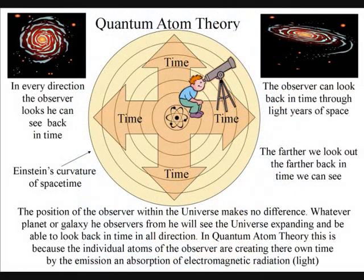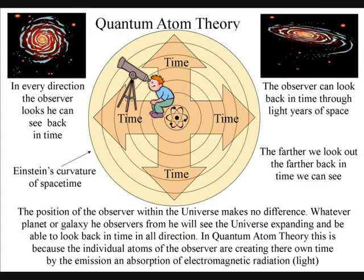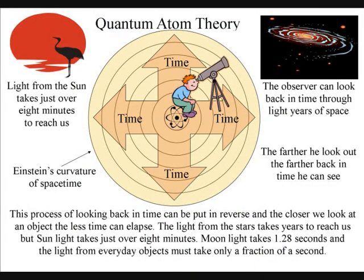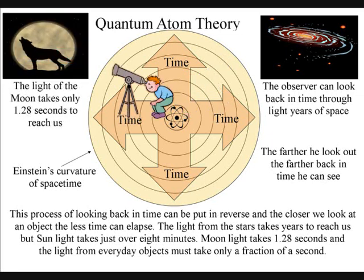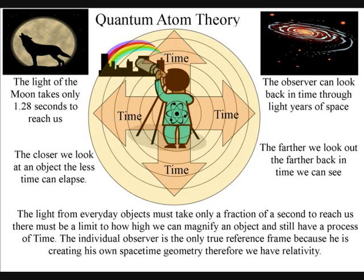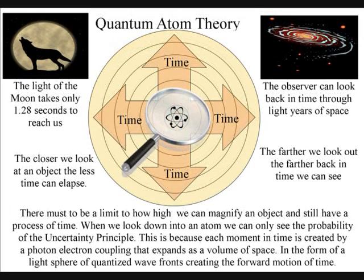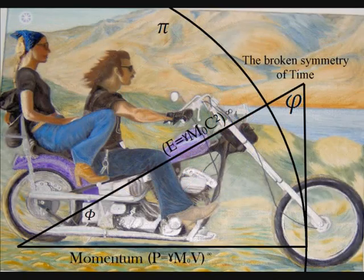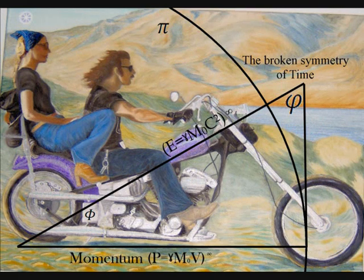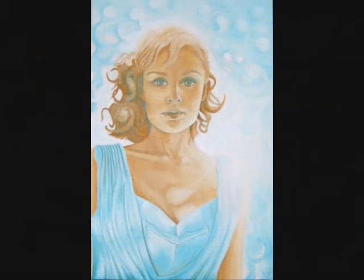Because of this, the observer is at the centre of his own broken symmetry and can look back in time through light-years of space in every direction. And the position of the observer within the universe makes no difference. Whatever planet or galaxy he observes from, he will see the universe expanding and be able to look back in time in all directions. Therefore momentum itself is frame-dependent, and the observer as a group of atoms is the only true reference frame.